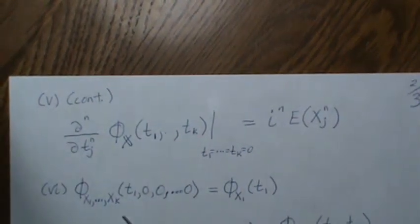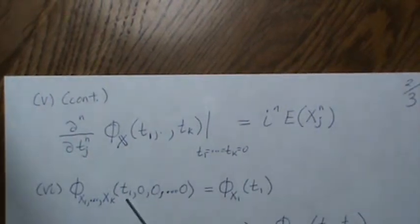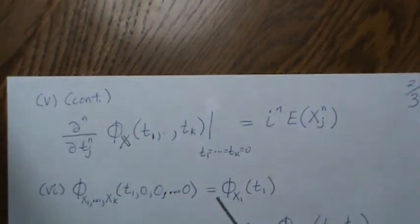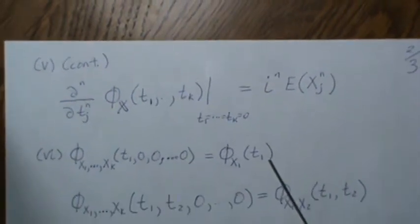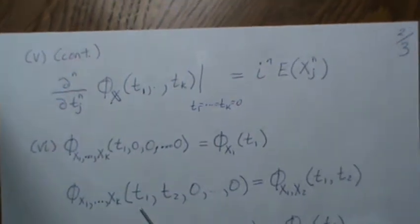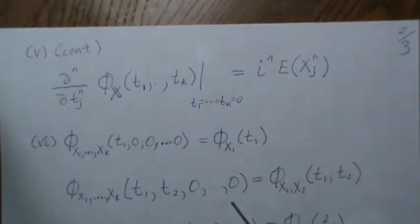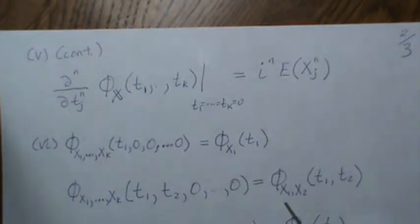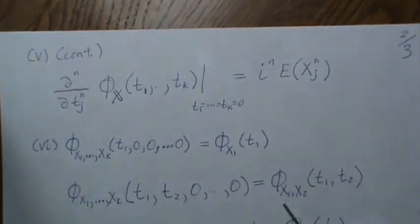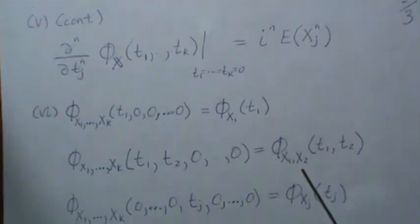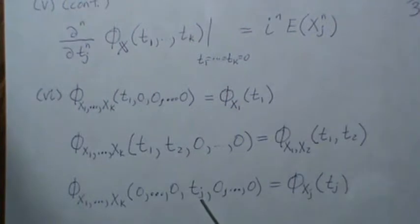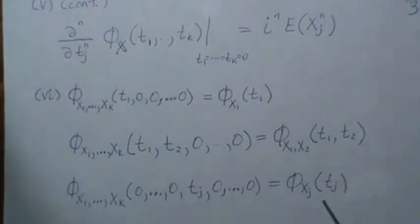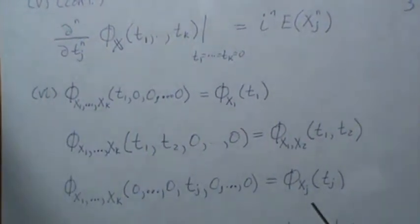If you only differentiate with respect to one of the T's, say you do it N times, and then evaluate it at zero, you just get the nth moment for that component or that random variable, times I to the N. Another thing with the joint moment, if you plug all zeros except for one, then you get the characteristic function for that variable.